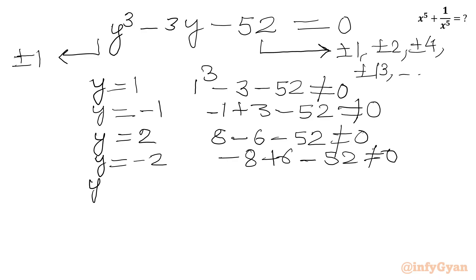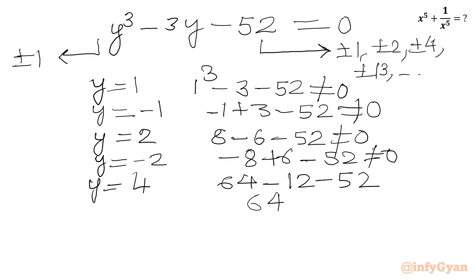The next number to try is 4. Plugging y equal to 4 into our cubic equation, we get 4 cubed which is 64, minus 3 times 4 which is 12, minus 52 — and yes, this time it equals zero. So y equal to 4 is our base solution.